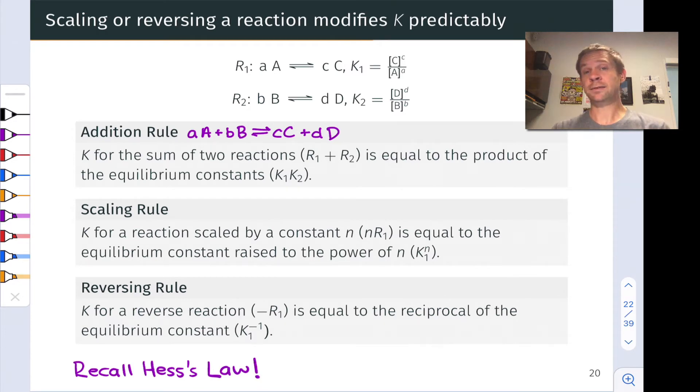Now we could write the reaction quotient for this new addition reaction, the sum of the two reactions, just by inspecting the form of the reaction itself. And we get something like this, C and D molarities in the numerator and A and B molarities in the denominator. Nothing too surprising there.